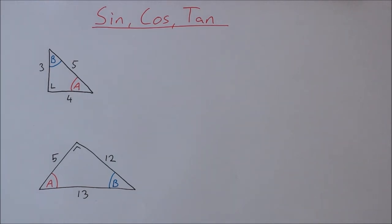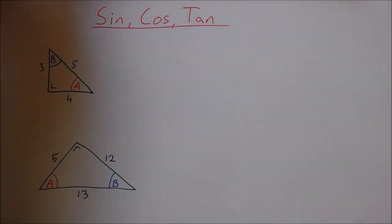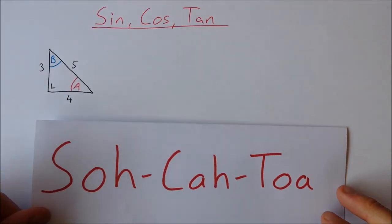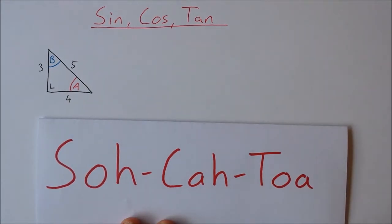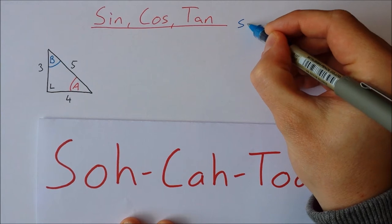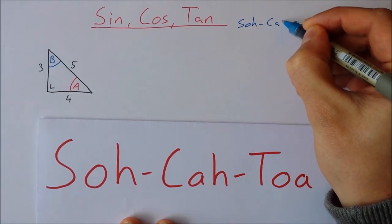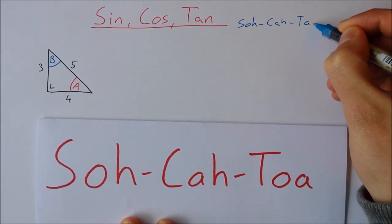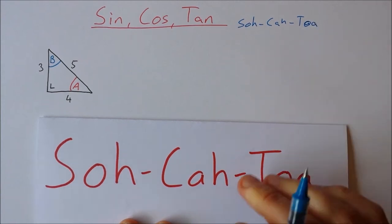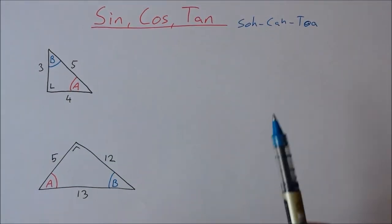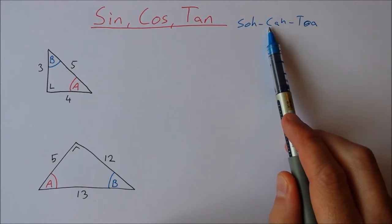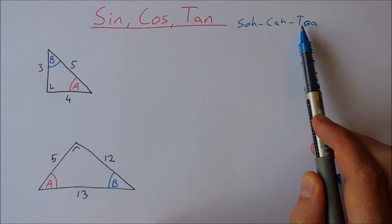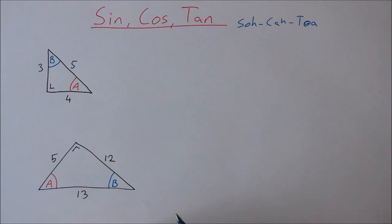When I'm looking at sine, cosine, and tan, I always bring it back to SOH-CAH-TOA. I'll always write this up somewhere on the page. What this means is: sine is opposite over hypotenuse, cos is adjacent over hypotenuse, and tan is opposite over adjacent.